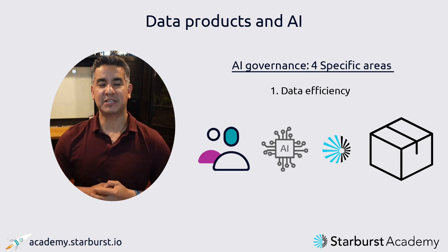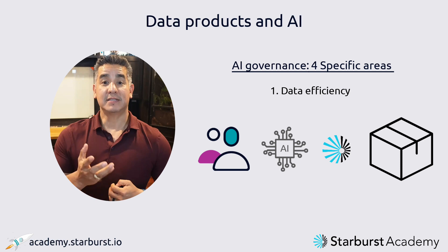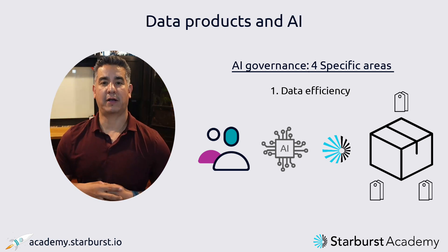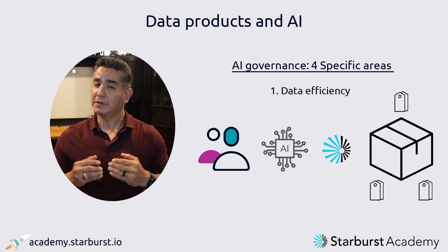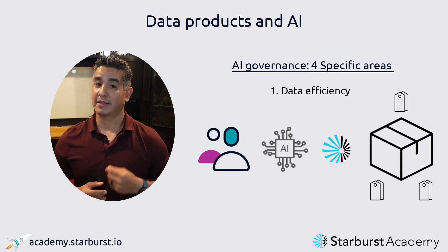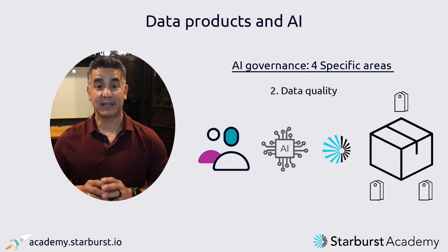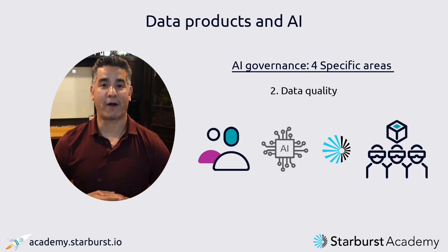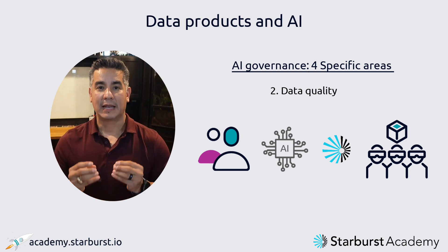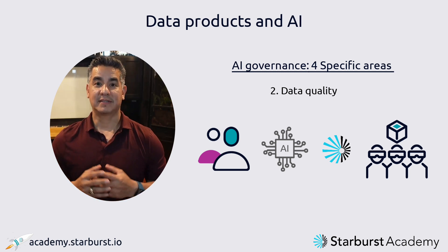It's a data product because it's not just an asset. We're also going to describe it: this is where the data came from, this is how you use the data, this is the data's risk profile. And what we're starting to do now is solve another problem for AI governance teams. The second problem is data quality. If I can focus my efforts and sit a domain team around a data product, and we can describe it as best we can and improve the quality to where it needs to be, that's a lot less effort.